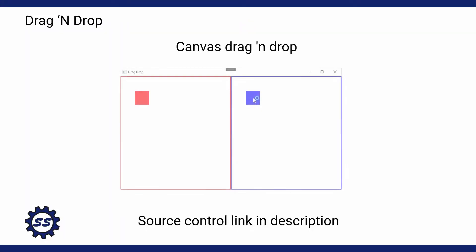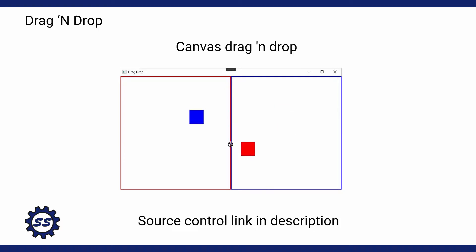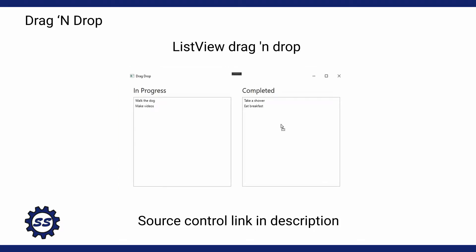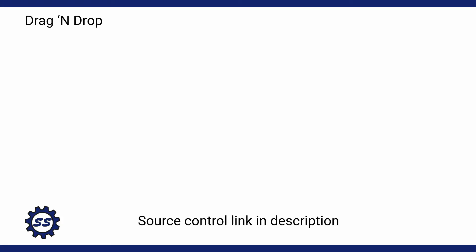We have come quite a long way with our drag and drop journey, but today I want to continue by taking our drag and drop a little bit further and showing off how to drag and drop between multiple list views. Because so far all we've done is drag and drop between canvases, but most applications probably aren't using canvases for their data — they're using list views or some kind of list control to display data.